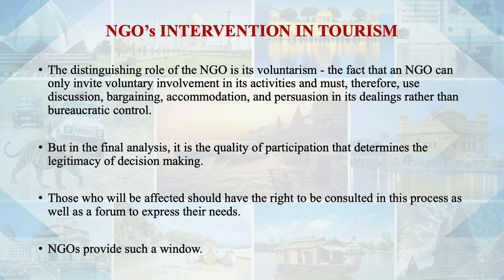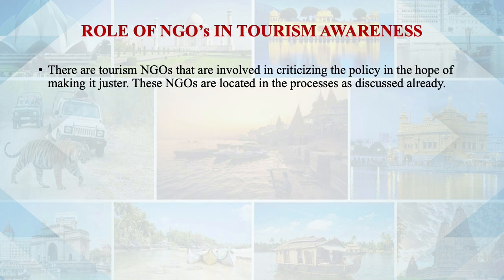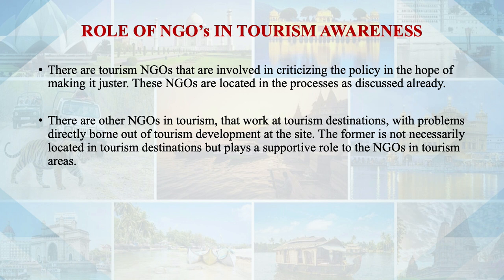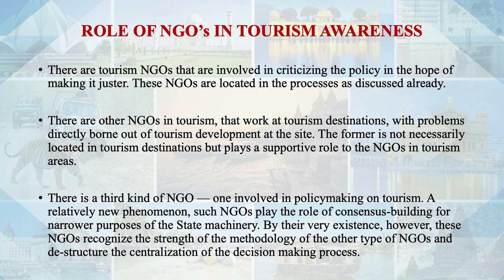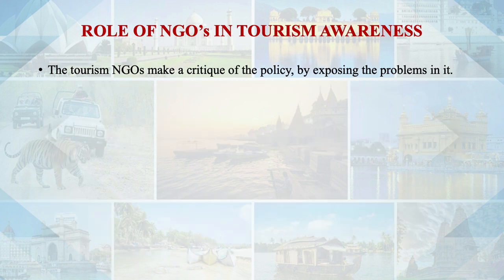Dear learners, NGOs play a very important role in tourism awareness. There are different types: first, tourism NGOs involved in criticizing policy in the hope of making it just; second, NGOs that work at tourism destinations with problems directly arising from tourism development at the site; and third, NGOs involved in policy-making on tourism, a relatively new phenomenon. Such NGOs play the role of conscientious building for narrower purposes. By their very existence, these NGOs recognize the strength of other types of NGOs and help decentralize decision-making processes.